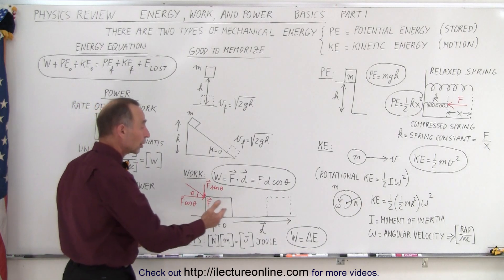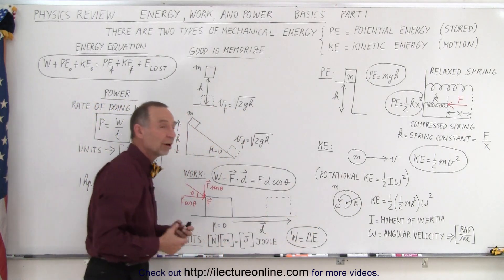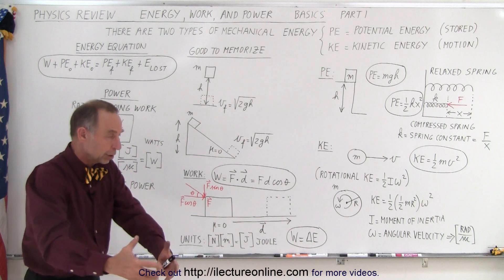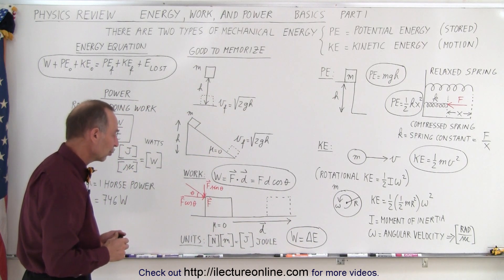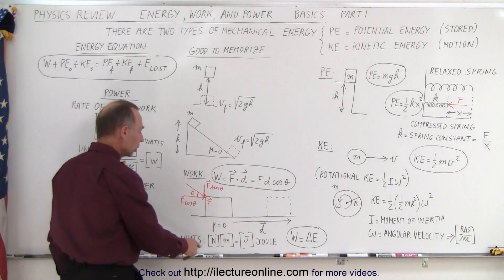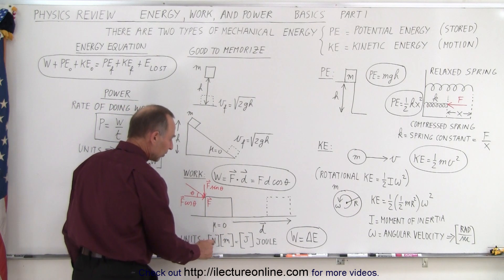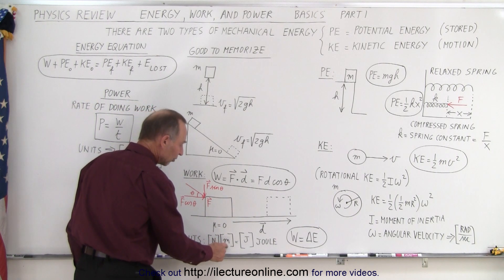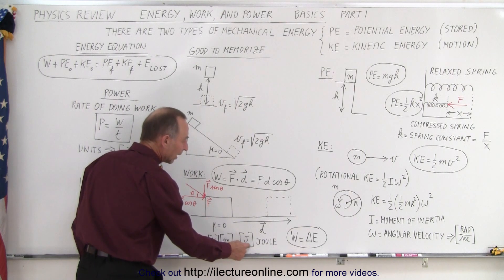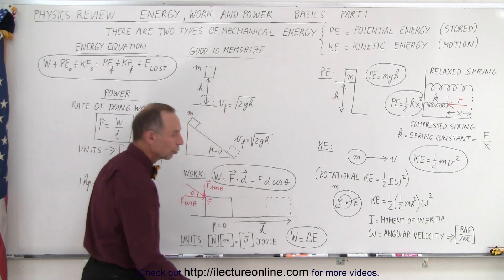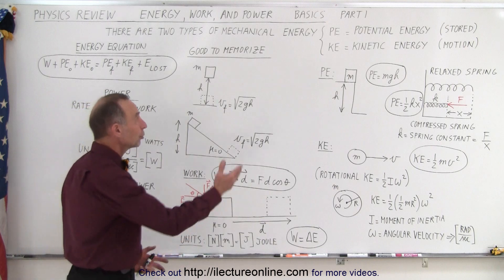We can also say that the work done equals the change in energy of the object on which you do work. And so we'll see some examples of that as well. The units for work are Newton times meters. And a Newton times meter, because that's force times meter, which is displacement, gives you joules. And joules is a unit of work, which is also a unit of energy.